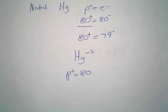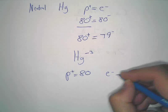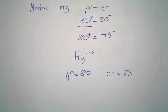Now, if we have a negative 3 charge, that means we have 3 more electrons than protons. That means you're going to have 83 electrons. Again, you cannot change the number of protons, only the number of electrons.